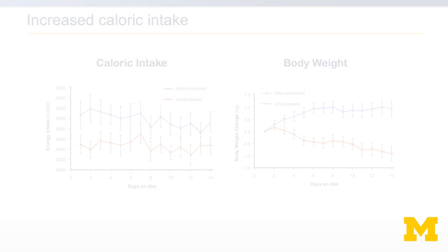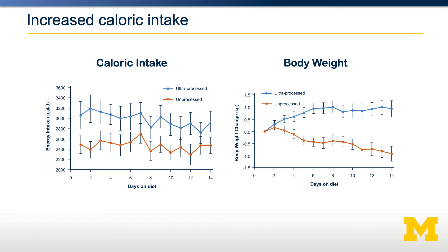So what happened? People placed on the ultra-processed diet tended to consume quite a bit more calories — about 500 calories per day more than when they were on the unprocessed diet. As you would expect, since they were consuming more calories, people on the ultra-processed diet tended to gain weight, gaining about a kilogram over the course of those two weeks. On the other hand, people on the unprocessed diet lost weight — about a kilogram over two weeks. This is highly suggestive that eating an ultra-processed diet makes us eat more calories over time. However, there are two limitations. One is that the study is quite short term — they only followed people for two weeks, and we don't know what would happen over six weeks, six months, or five years.